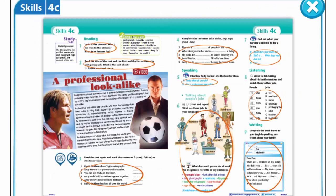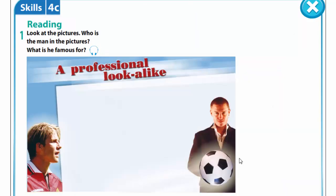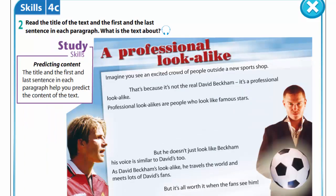Now please open your books at page 50, exercise 1. Look at the pictures. Who is the man in the pictures? What is he famous for? The pictures show David Beckham. He is a famous footballer. In exercise 2 you are to read the title of the text and the first and the last sentence in each paragraph. What is the text about? The text is about a man who looks like Beckham and whose job is to double for David Beckham.